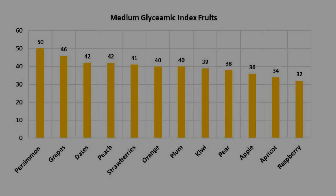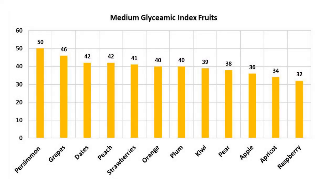There are 12 fruits under the medium GI category. In this category, persimmon is on top with a GI of 50. The other fruits are grapes, peach, strawberries, orange, kiwi, pear, apple, and apricot. These fruits are suitable for diabetic patients.